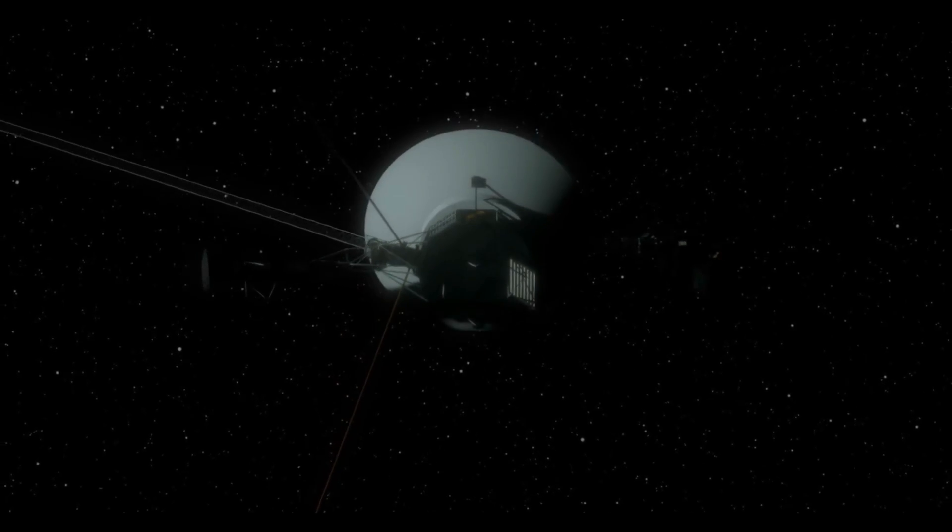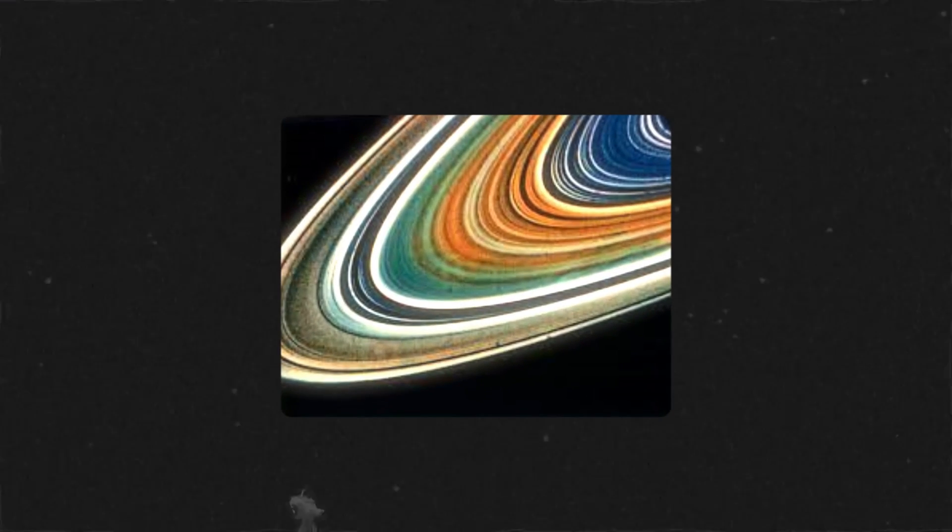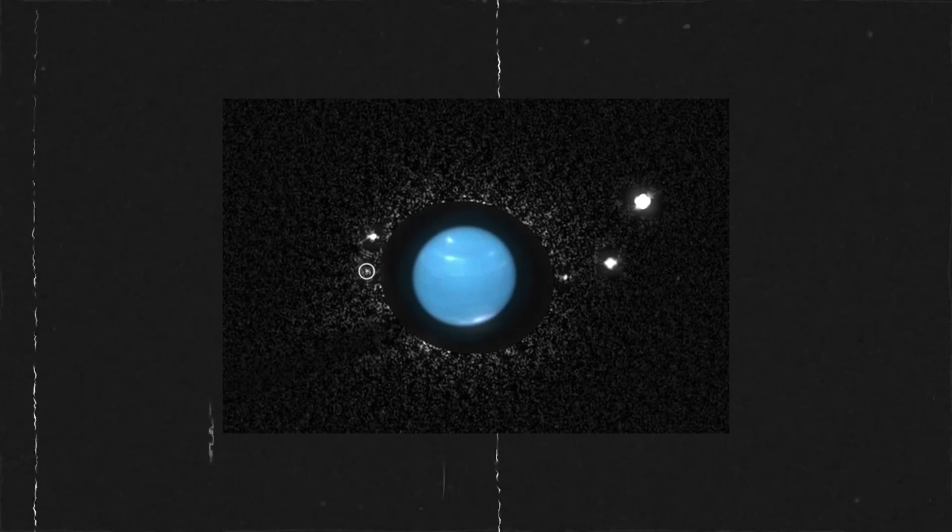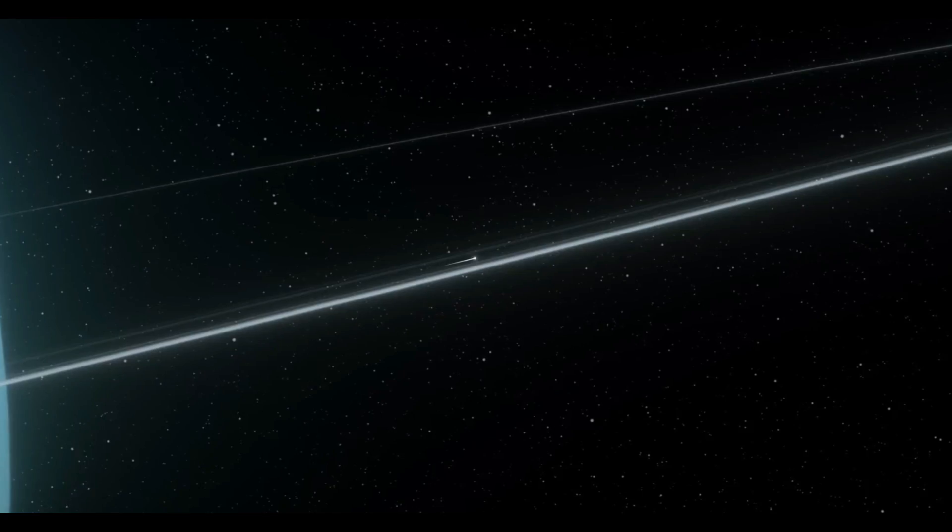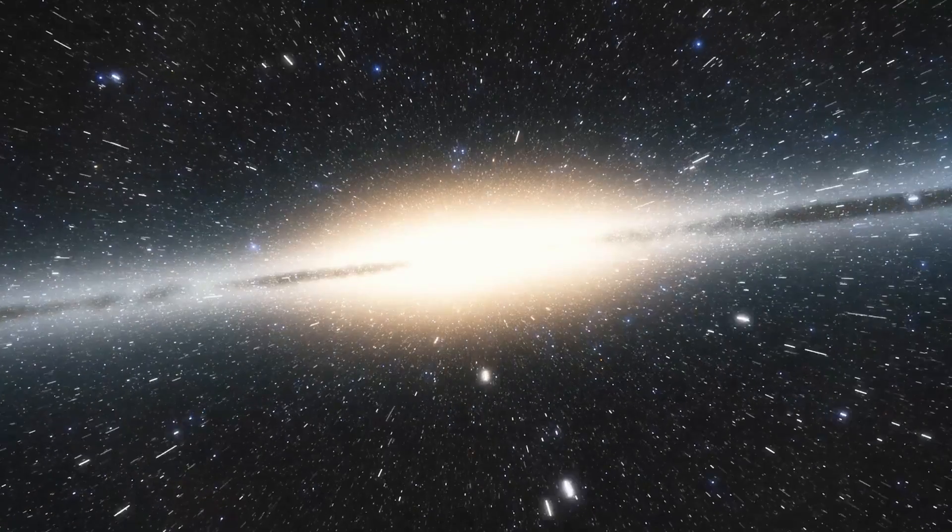They also revealed the intricate details of Saturn's rings and discovered new moons around Uranus and Neptune. After completing their initial mission to study the outer planets, the Voyager spacecrafts continued their journey towards interstellar space.